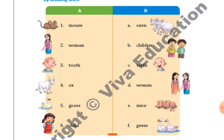Fourth: 'ox' — the correct answer is 'oxen'. Fifth: 'goose' — the correct answer is 'geese'. And sixth: 'child' — the correct answer is 'children'.